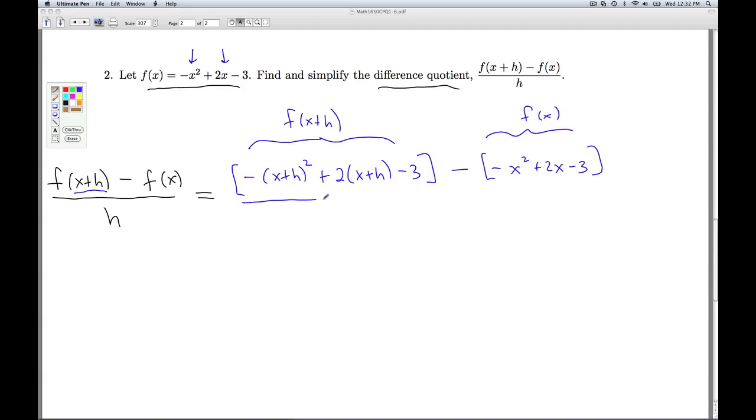And so our goal is to simplify. And if we've done everything correctly, the promise is that that h will cancel out from the denominator.